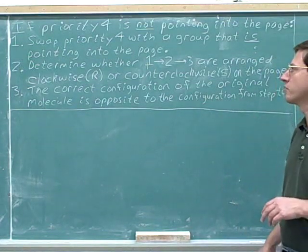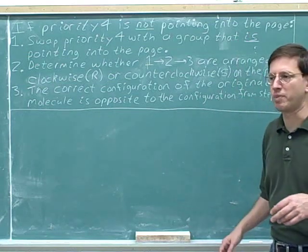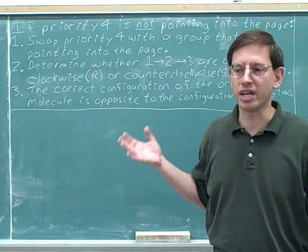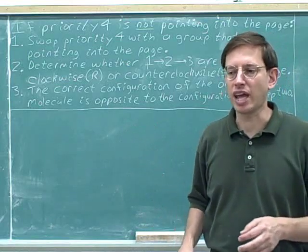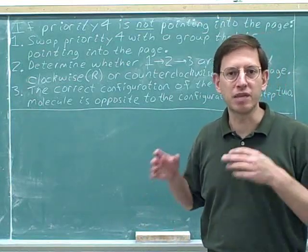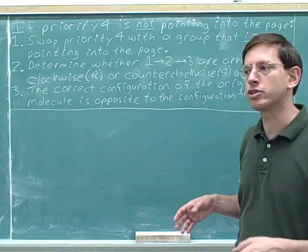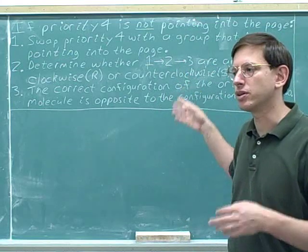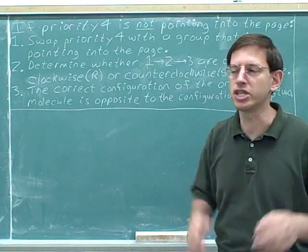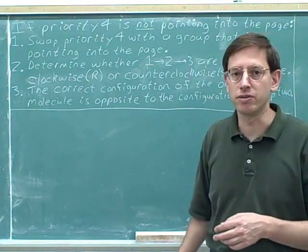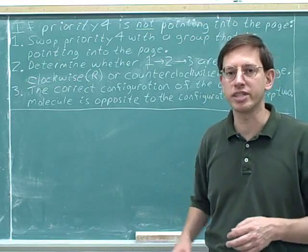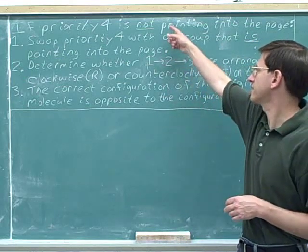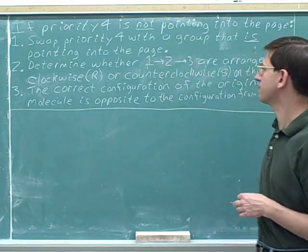This is the method that we use when the priority four group is not pointing into the page. What does it mean if the number four is not pointing into the page? Well, it might be pointing out of the page, or it might be pointing in the plane of the page. So there are really two different situations that we can handle with the same method — either the number four priority is pointing out of the page, or pointing in the plane of the page. In both cases, the number four is definitely not pointing into the page.